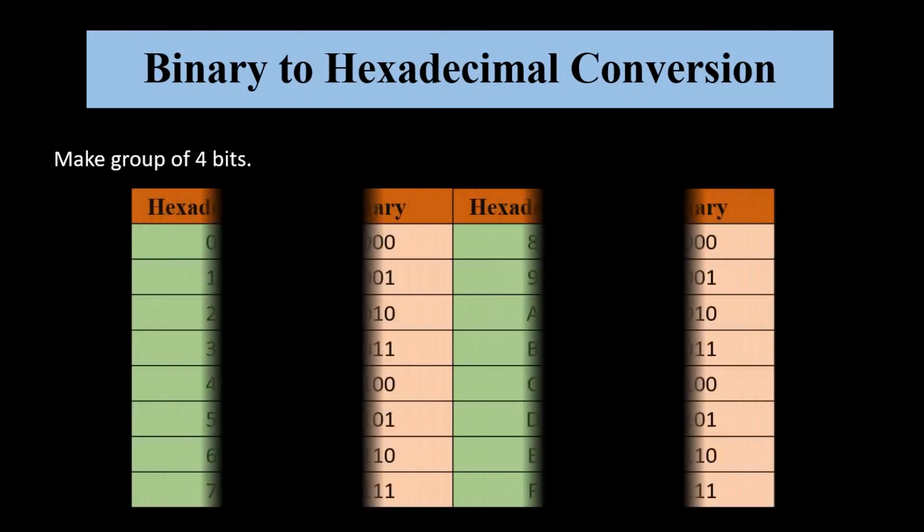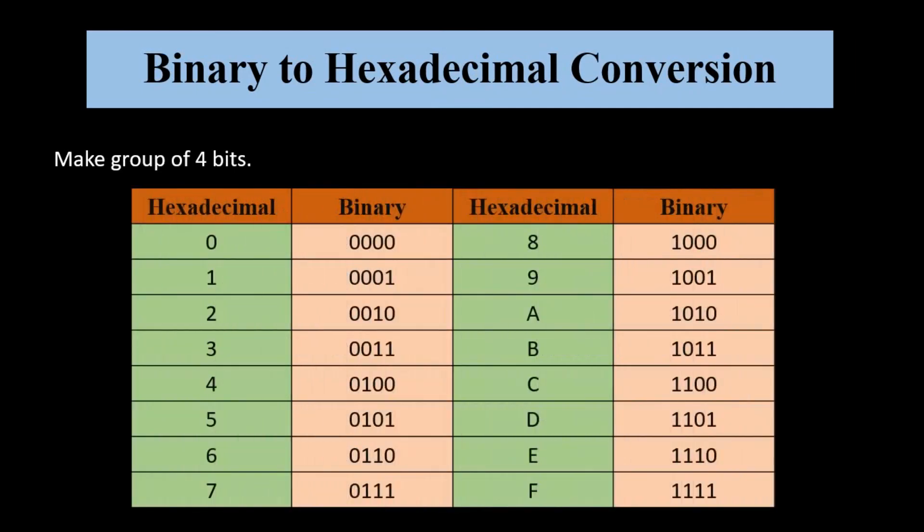Now we will learn to convert binary number to hexadecimal number. Here we have to do the reverse process. At first we have to make groups of 4-bit binary numbers and then we have to write equivalent hexadecimal digits in place of 4-bit binary numbers.